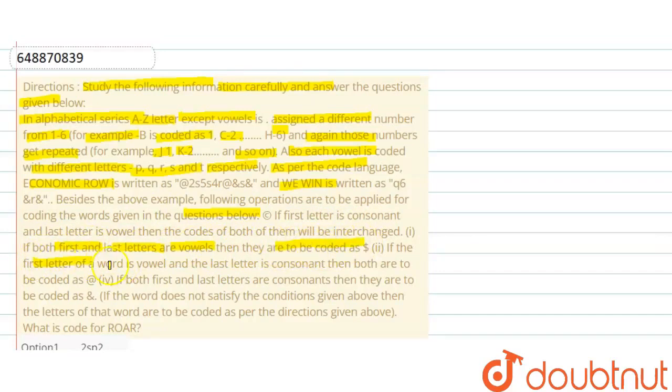Third condition: if the first letter of word is vowel and the last letter is consonant, then both are to be coded as at the rate symbol. Fourth: if both first and last letters are consonants, then they are to be coded as ampersand. If the word does not satisfy the conditions given above, then the letters of the word are to be coded as per the direction given above.